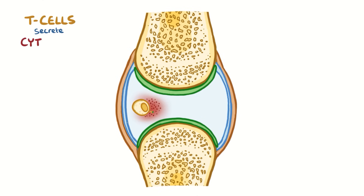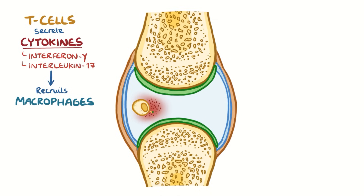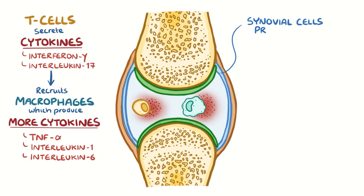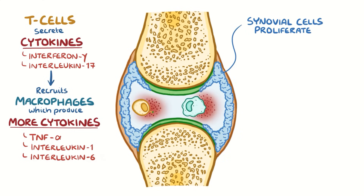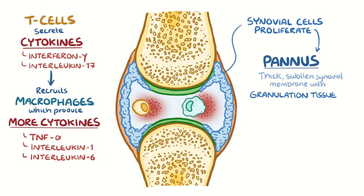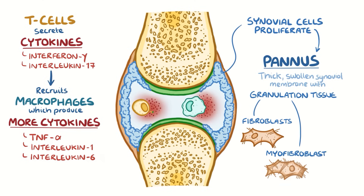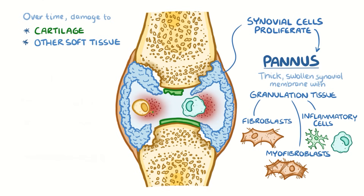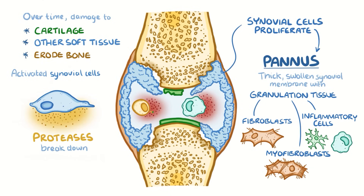Once there, T cells secrete cytokines like interferon gamma and interleukin 17 to recruit more inflammatory cells like macrophages into the joint space. Macrophages also produce inflammatory cytokines like tumor necrosis factor or TNF-alpha, interleukin 1 and interleukin 6, which together with T cell cytokines stimulate synovial cells to proliferate. The increase in synovial cells and immune cells creates a pannus — a thick swollen synovial membrane with granulation or scar tissue made up of fibroblasts, myofibroblasts and inflammatory cells. Over time, the pannus can damage the cartilage and soft tissues, and erode bone. Activated synovial cells also secrete proteases, which break down the proteins in the articular cartilage.